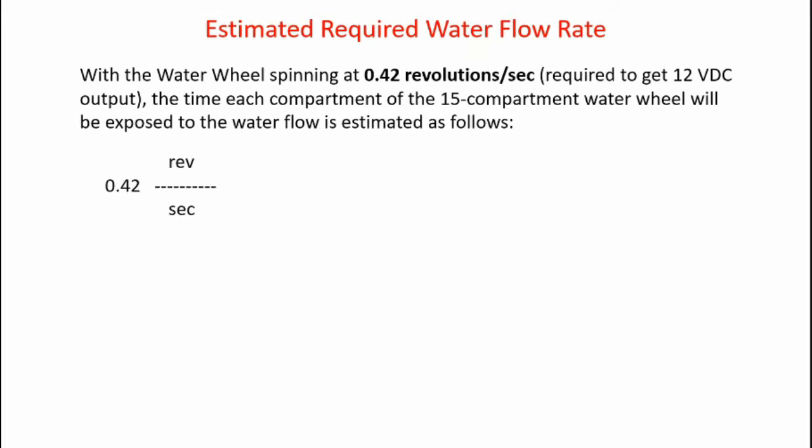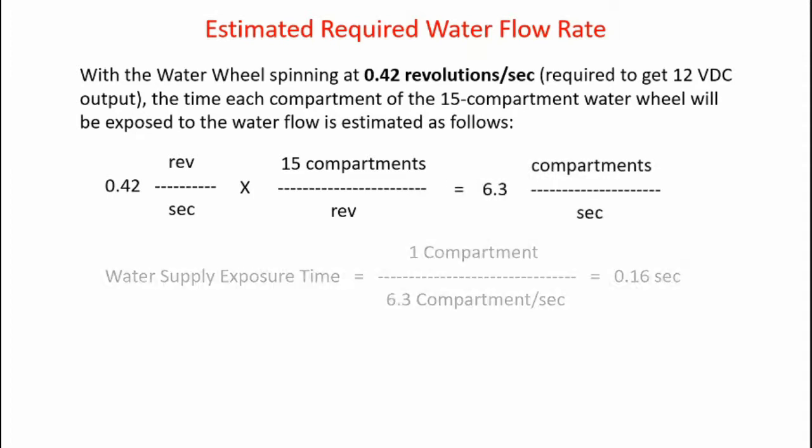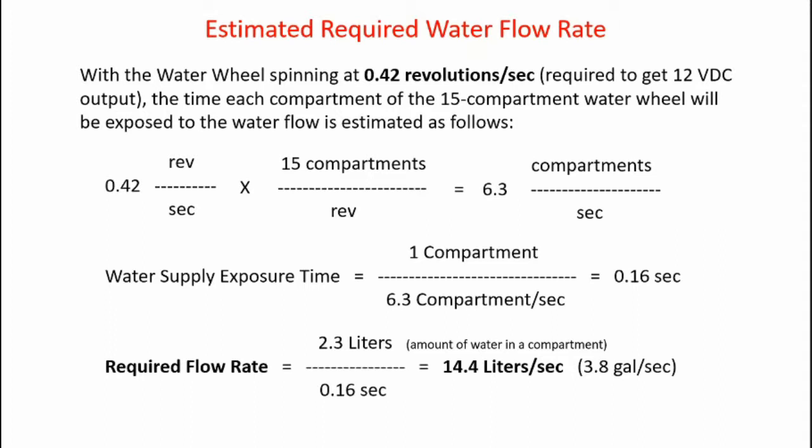Here's our 0.42 revolutions per second, multiplied by 15 compartments per revolution, giving 6.3 compartments per second. The water supply exposure time is one compartment divided by 6.31 compartments per second, giving an exposure time of 0.16 seconds. The required flow rate is the amount of water in the compartments, 2.3 liters, divided by 0.16 seconds, giving 14.4 liters per second. That's how much water must be flowing to rotate the wheel at 0.42 revolutions per second.